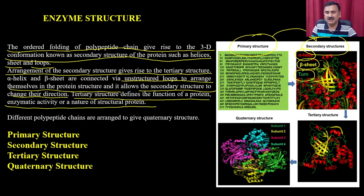The primary structure is the chain of amino acids. When these primary structures fold, they give the secondary structures, which include alpha helices, beta sheets, and turns. When these secondary structures are connected by unstructured loops, they arrange themselves in a protein structure, allowing the secondary structures to change their directions. The tertiary structure defines the function of a protein — its enzymatic activity or the nature of its structural role.